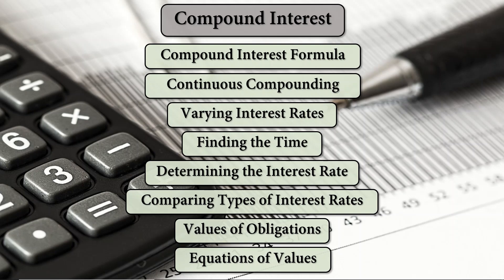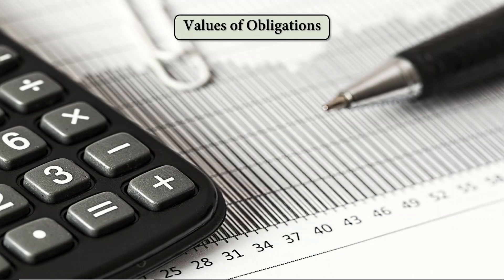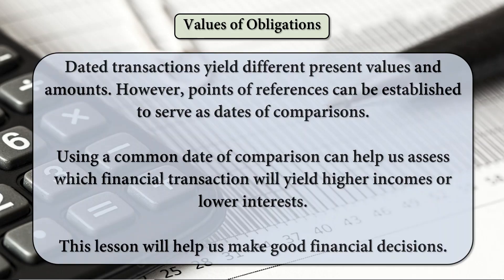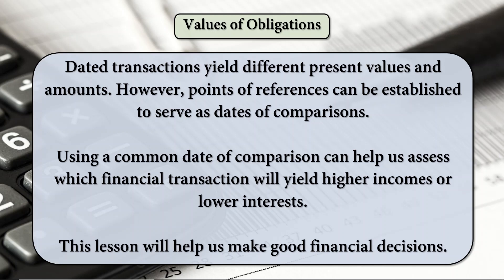Our second to the last topic under compound interest is about values of obligations. Dated transactions yield different present values and amounts. However, points of references can be established to serve as dates of comparison. Using a common date of comparison can help us assess which financial transaction will yield higher incomes or lower interest.